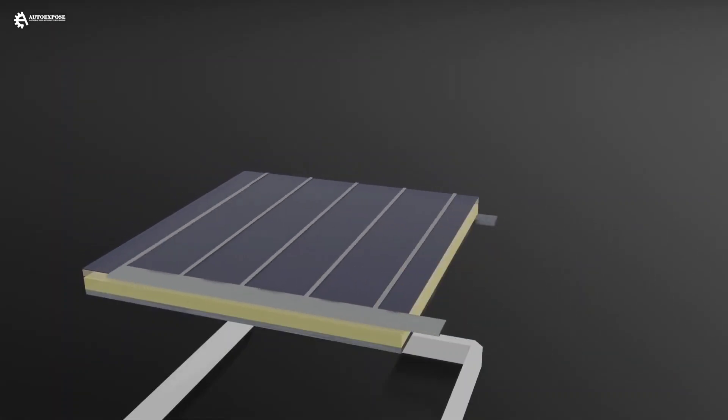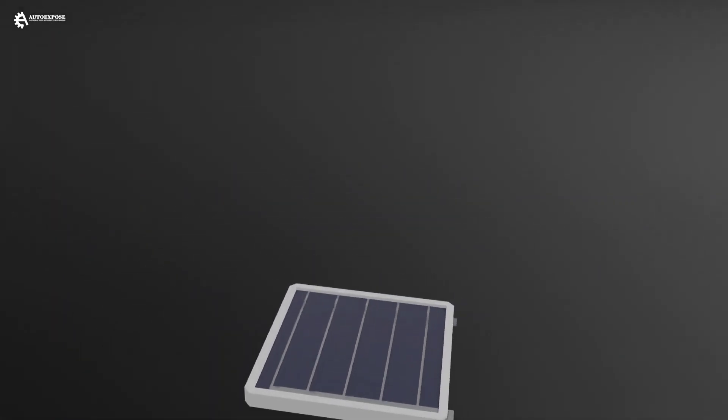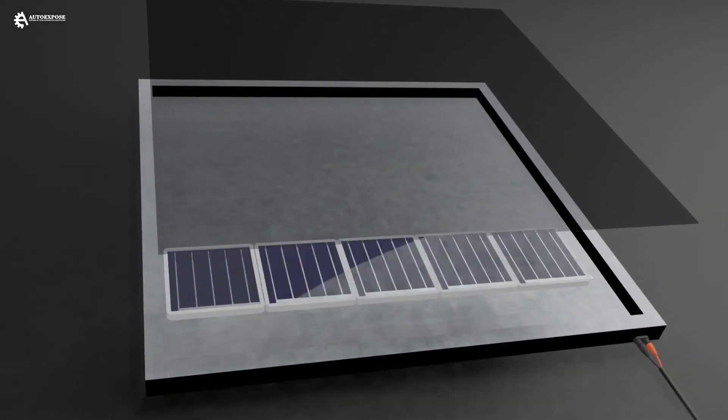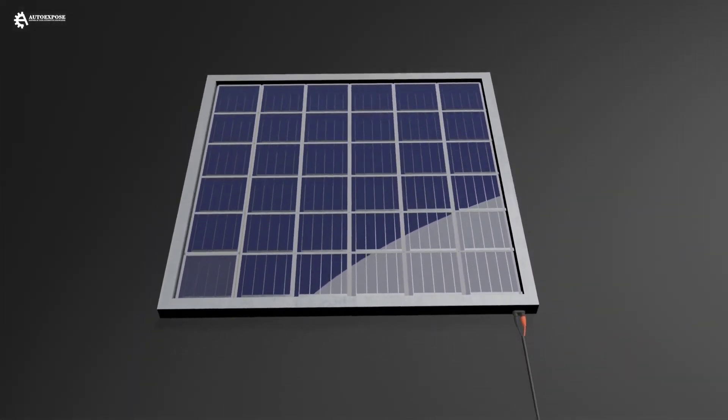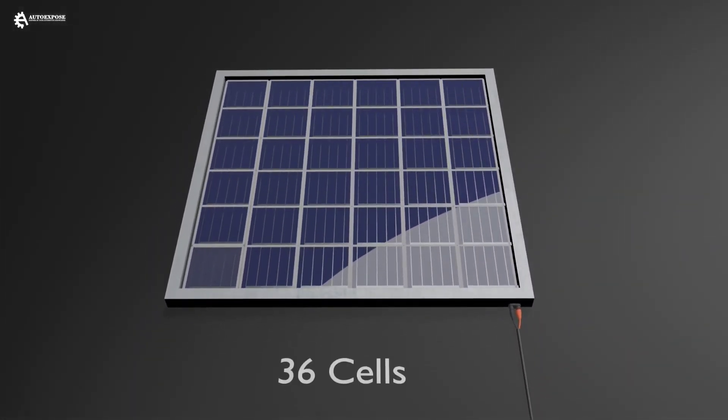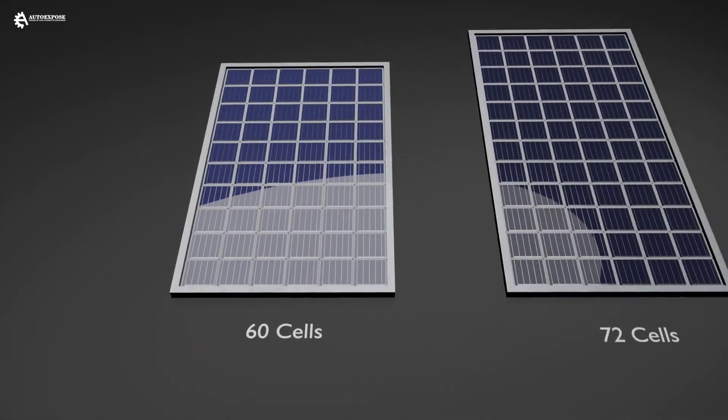Then, the solar cells will be arranged in series in a panel. The number of cells is also adjusted to the capacity of each panel. Some contain 36 cells, 60 cells or 72 cells.